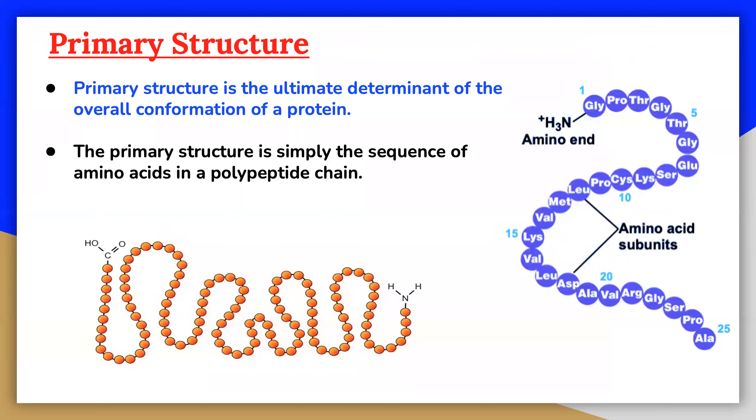Primary structure is the ultimate determinant of the overall conformation of a protein. The order in which the amino acids are joined together in protein synthesis starts defining a set of interactions between amino acids even as the synthesis is occurring. That is, a polypeptide can fold even as it is being made.